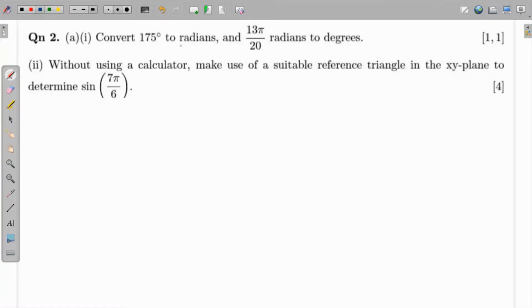We have to convert 175 degrees to radians and 13π/20 radians to degrees. Without using a calculator, we have to use a suitable reference angle to determine the value of sin(7π/6).